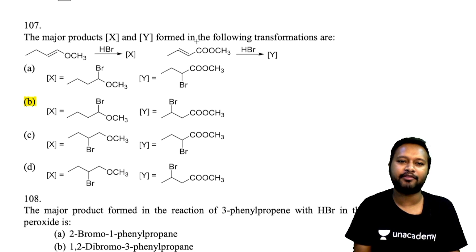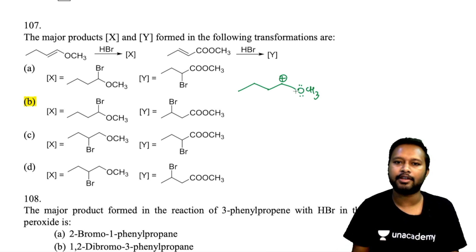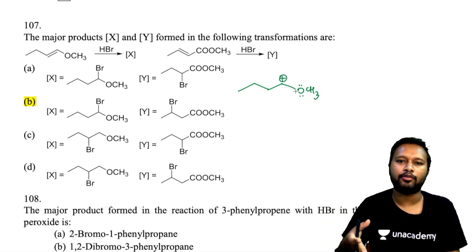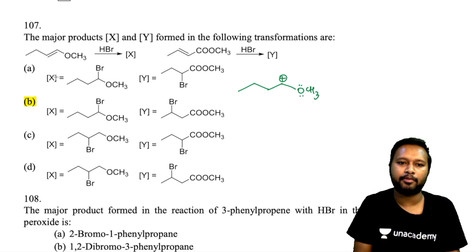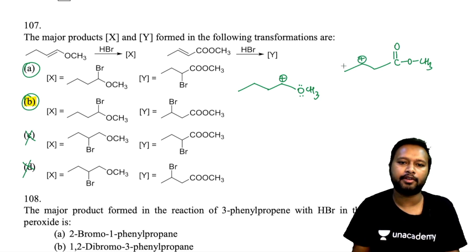Question 107: products X and Y from two reactions. For product X: the more stable carbocation is the one adjacent to the oxygen (alpha to heteroatom), stabilized by lone pair donation — options C and D are eliminated, leaving A or B. For product Y: the ester group does not stabilize the carbocation by lone pair donation, so the more stable benzylic carbocation forms, and bromine attacks there. Option B is correct overall.